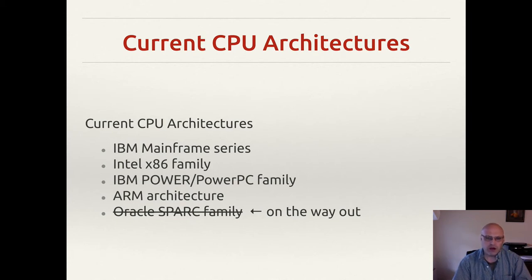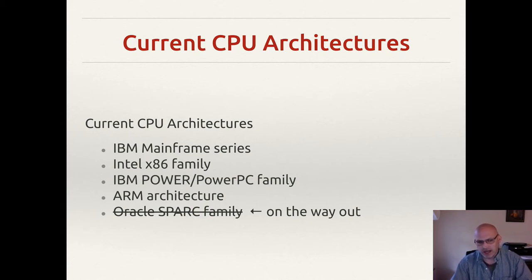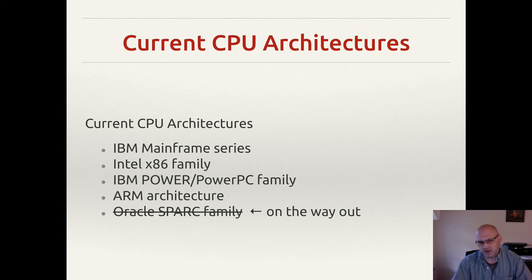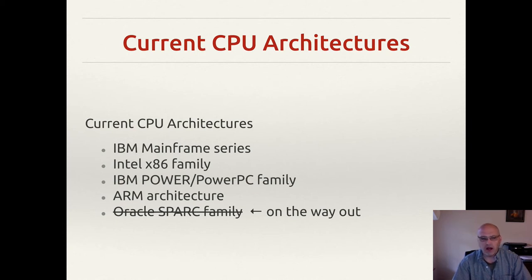Let's start with discussing CISC and RISC. But first, let's look at a list of current architectures out there in the wild right now. This is not inclusive of everything — it's just a subset of some major ones. The first one on the list is the IBM mainframe series. This has obviously been around for a long time and has evolved quite a bit over its lifespan. What's neat is that most of what this architecture had initially is still supported in the current versions, even though we've had decades of evolution.